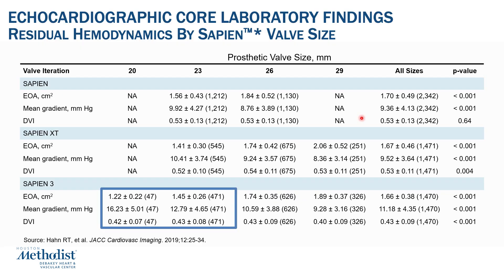Looking at the hemodynamic echo core lab findings from Becky Hahn's paper from 2018, with the balloon expandable Sapien valve, here are the echo-derived EOAs, mean gradients, and DVIs with the 20 or 23 millimeter Sapien valve. This patient would be a 20 millimeter Sapien valve, and the EOA would be 1.2 with a mean gradient of 16 after deployment and a DVI of 0.4. Across the spectrum with larger Sapien valves, DVIs remain in the 0.4 range — values in the moderate aortic stenosis range.